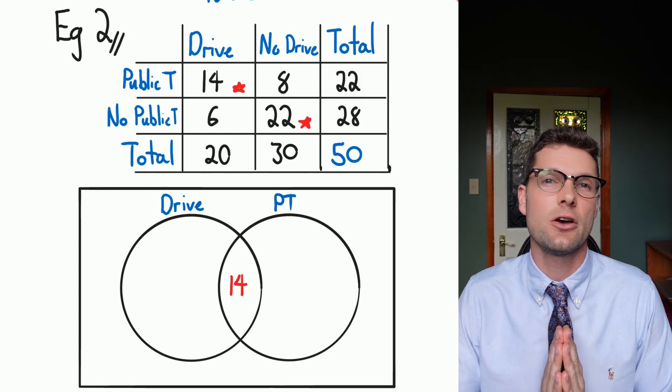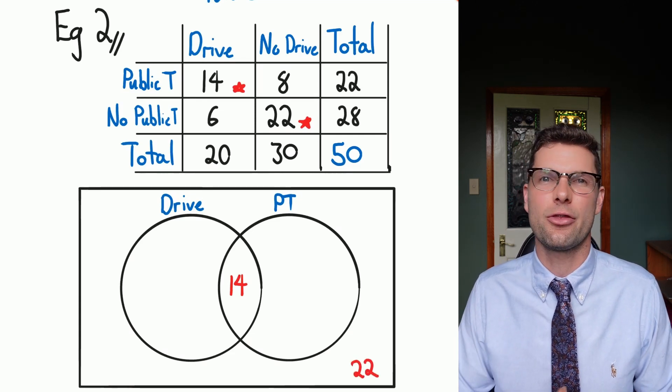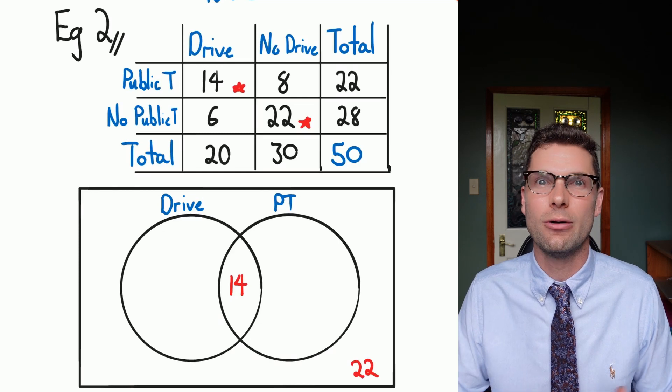These are the guys that do both, so 14 goes in the middle. And then because I know there are 22 people that do neither, I'm going to throw them on the outside. We're already halfway done.